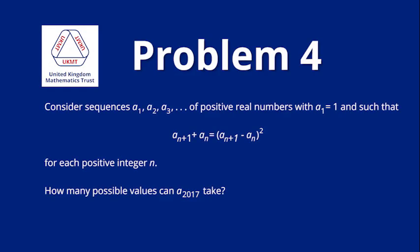Problem 4. Consider sequences a1, a2, a3, and so on of positive real numbers with a1 equal to 1 and such that an plus 1 plus an is equal to an plus 1 minus an all squared for each positive integer n. How many possible values can a2017 take?